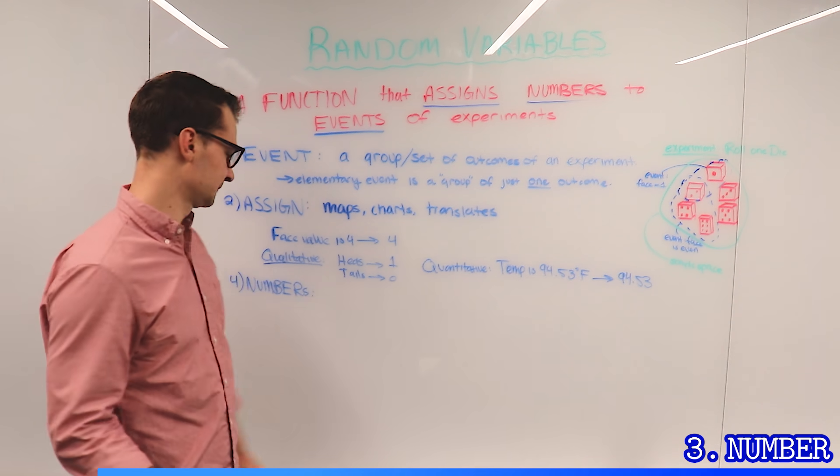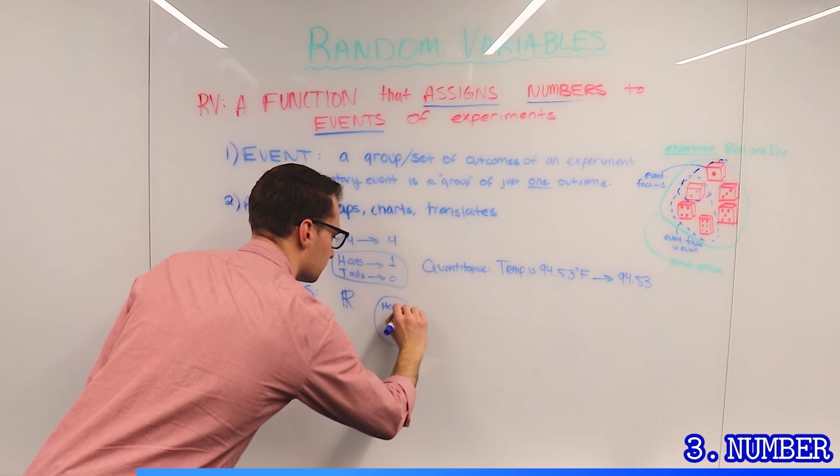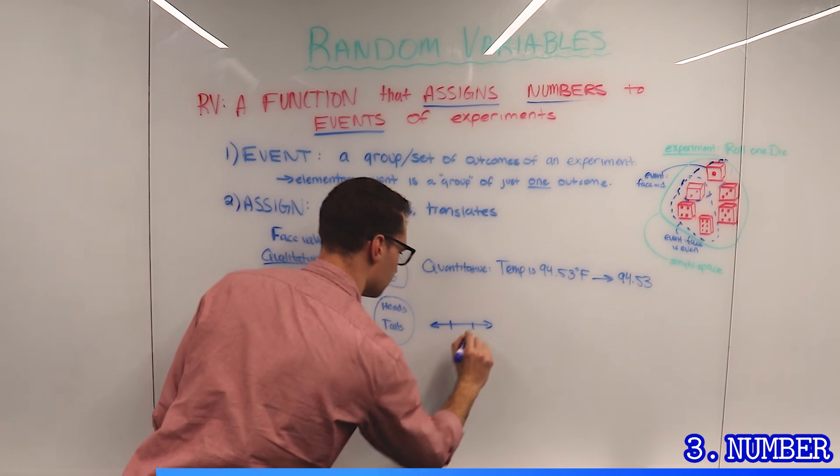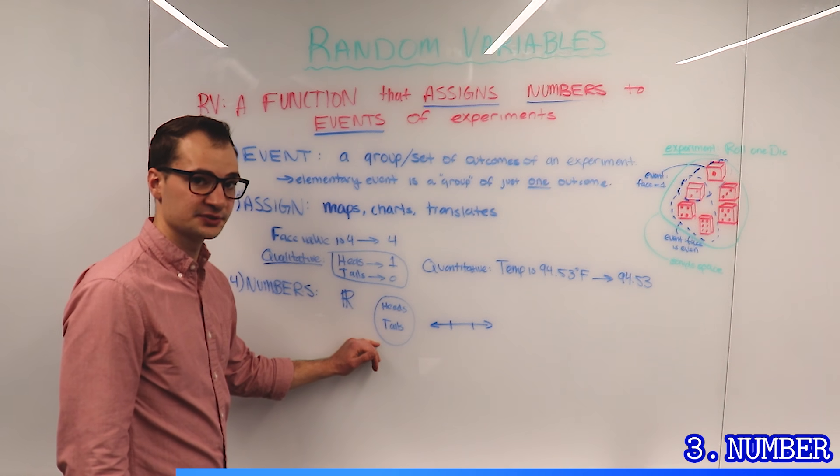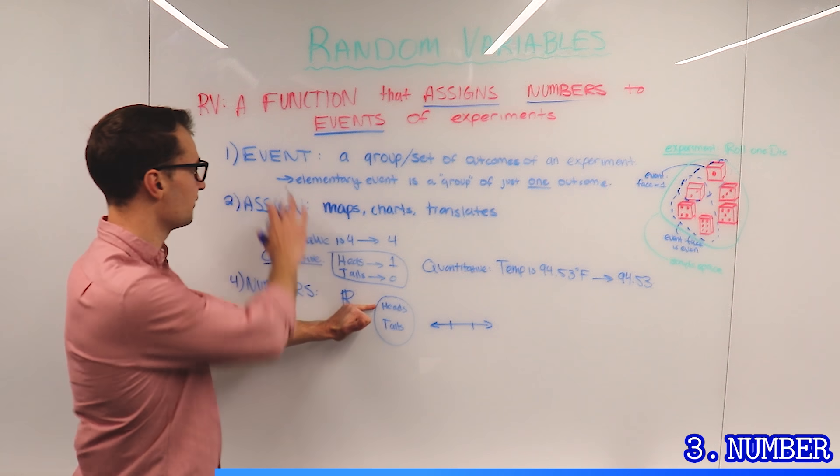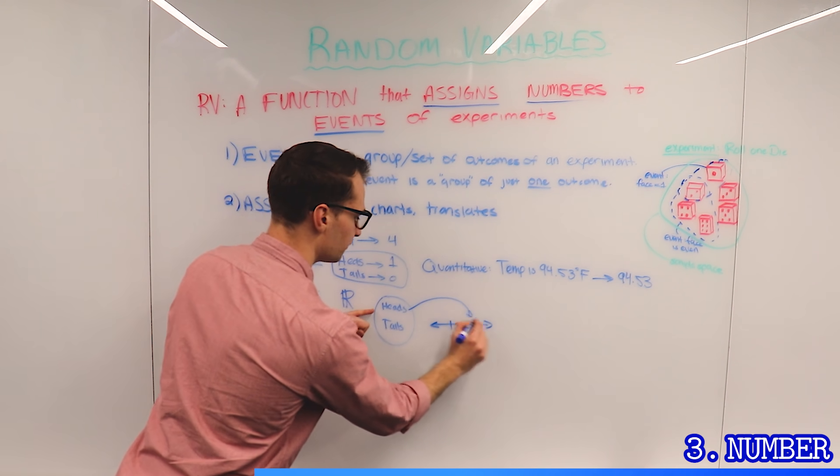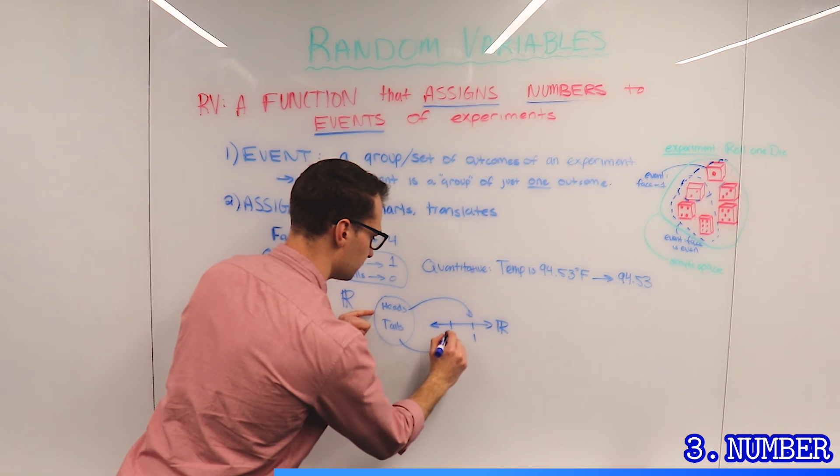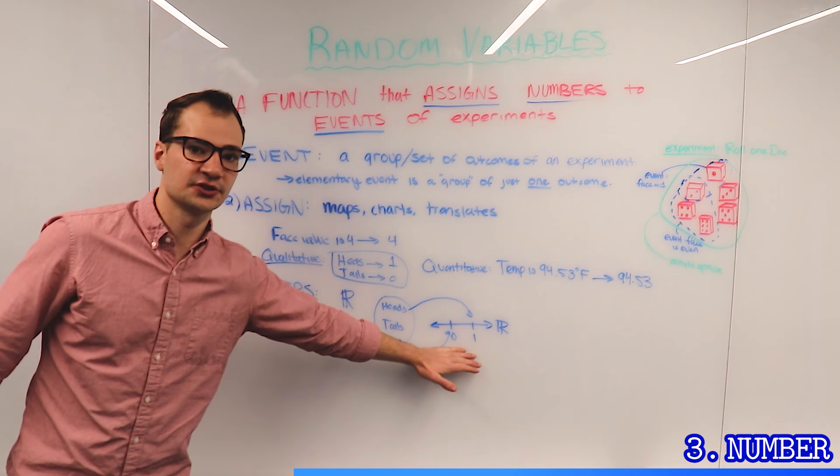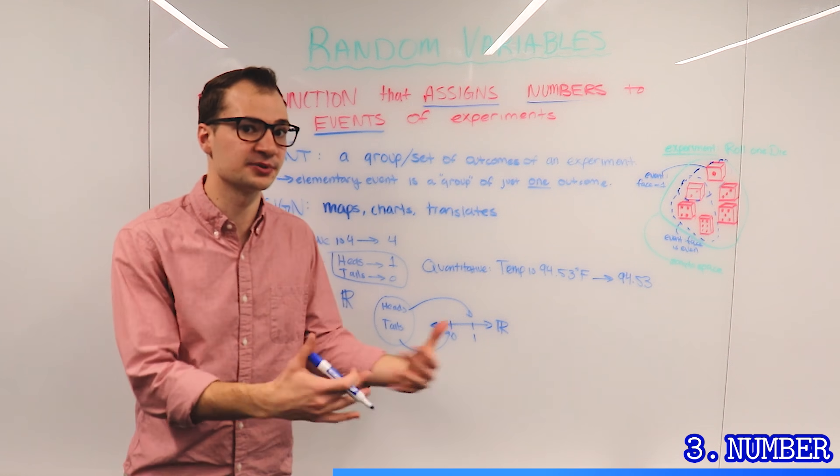So for every assignment, we're going to take it. When we have a sample space here and there's two possible outcomes or events, a heads and a tails, we're going to map each one onto the real number line and give it a value. This could be 199. It doesn't matter, right? We're just giving it a number, a representation, so we can do math on it because we can't do math on words.